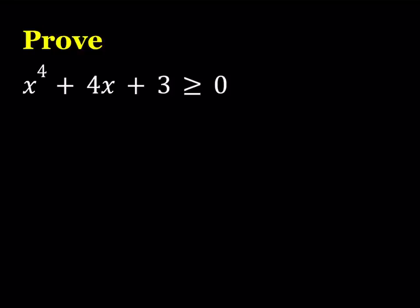Hello everyone. In this video, we're going to be proving an inequality. We have x to the fourth power plus 4x plus 3, and we need to prove that this is greater than or equal to zero. In other words, this function cannot take negative values.